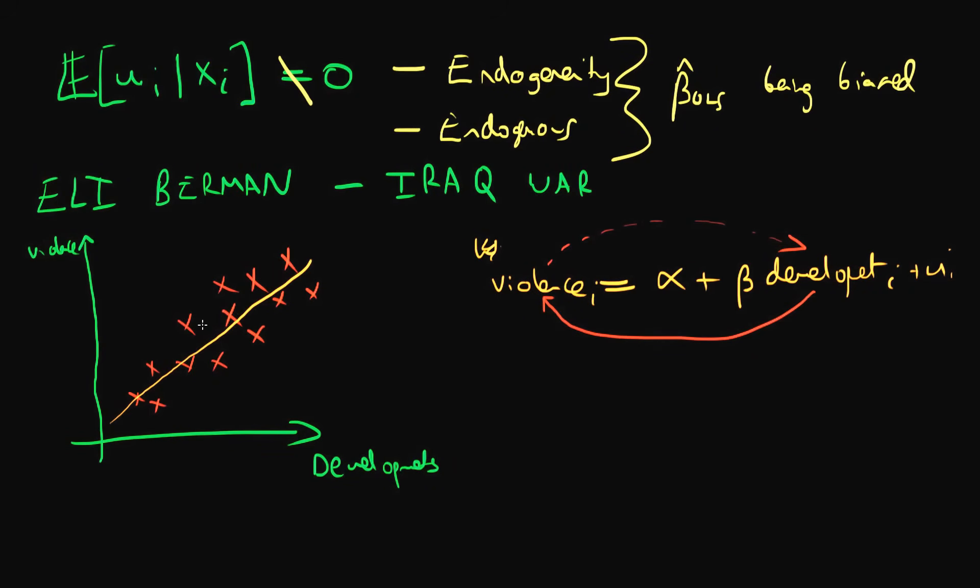On first glance it appears that there is some sort of positive relationship between development spending and violence, but that's nothing to do with the fact that development spending leads to increases in violence. It's because causality is acting in the opposite way.